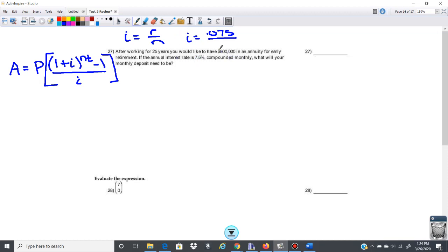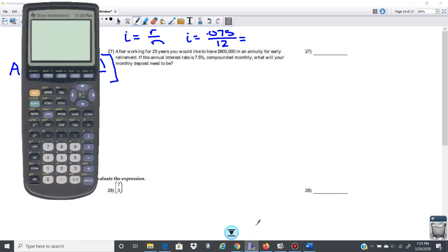And we're compounding monthly, so that is 12 times a year. So let's go ahead and get that. So that's 0.00625.